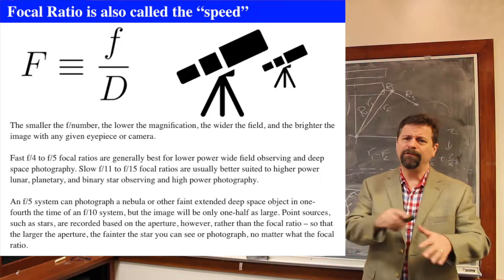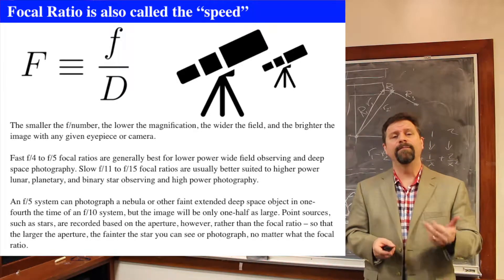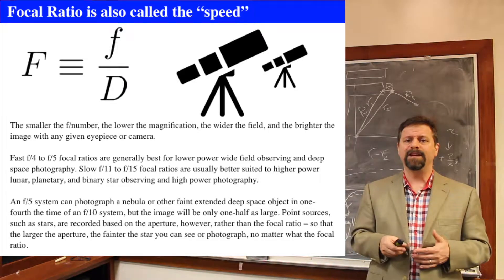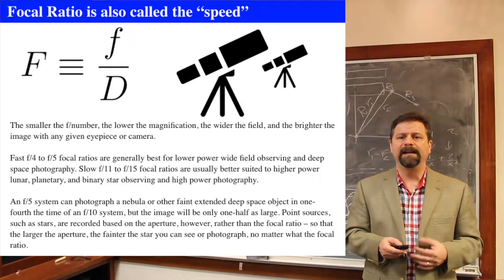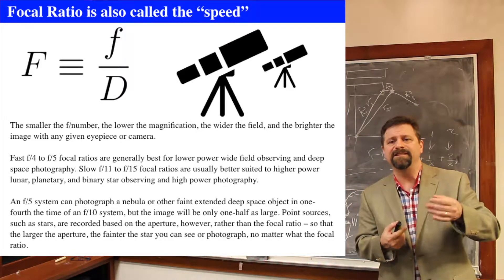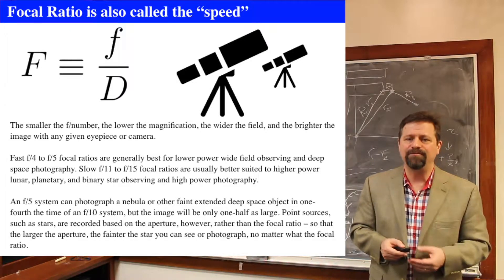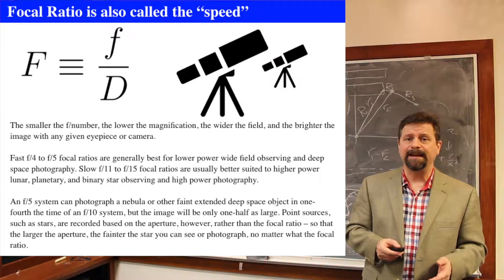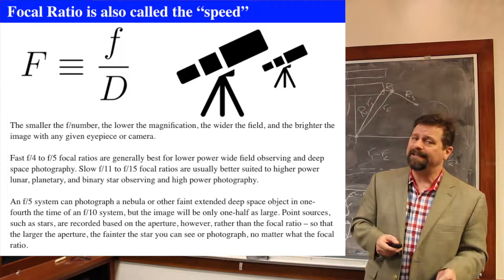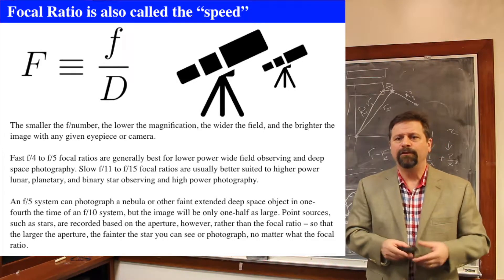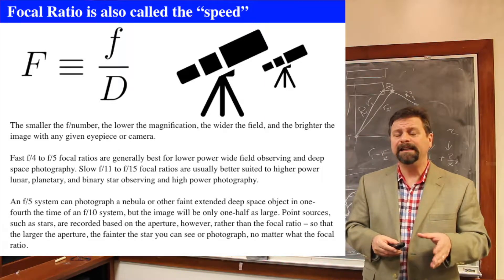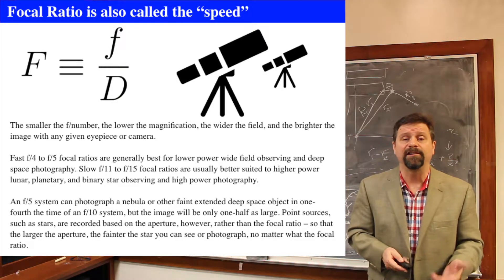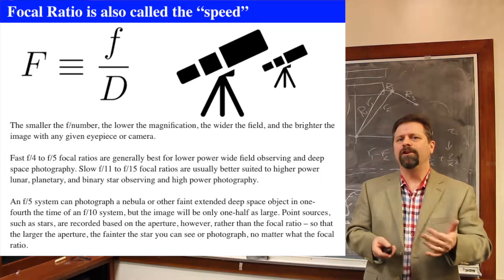Comparing an F/5 system to an F/10 system: for a given diameter, the F/5 system will be able to image an extended object — like a nebula — in about a quarter of the time, but the image will only be half as large at your detector. For point sources like stars, the focal ratio matters less because you're just trying to collect photons from a point source; aperture is more important. The focal ratio discussion here primarily applies to extended objects.